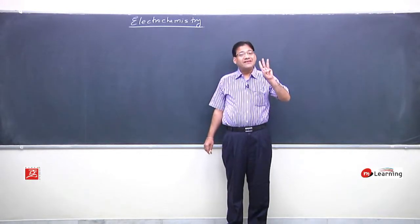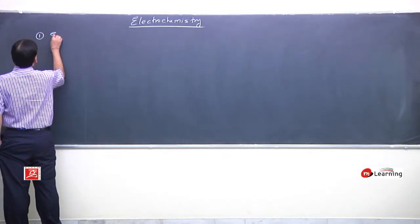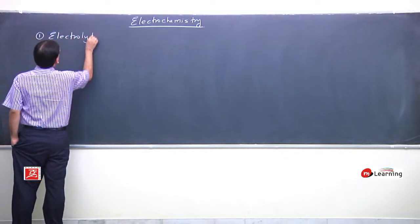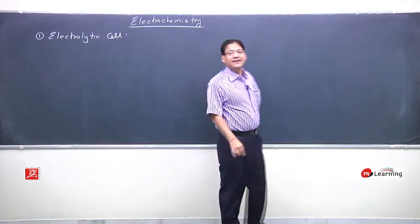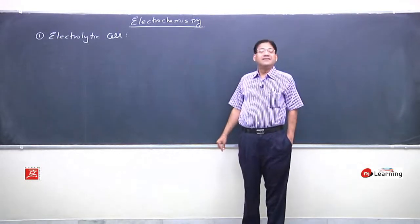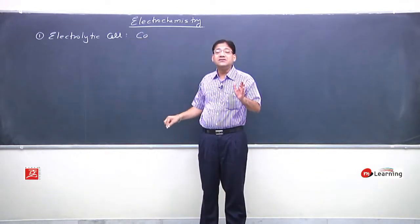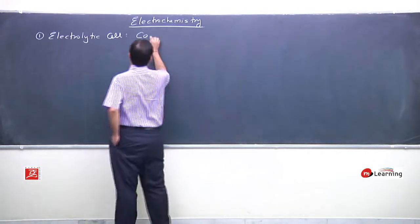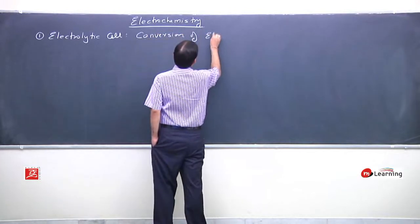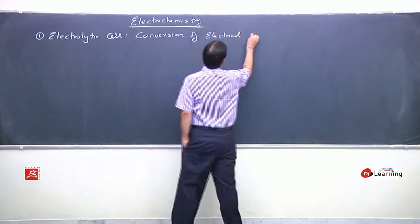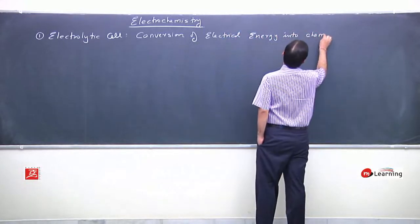This chapter will be studied in three parts. The first part of the chapter is the electrolytic cell. In this electrolytic cell, we will observe the conversion of electrical energy into chemical energy. The driving force of this phenomena is conversion of electrical energy into chemical energy.